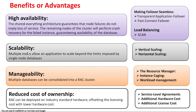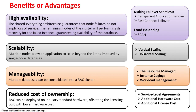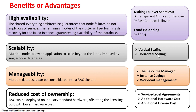Scalability in RAC supports both vertical and horizontal scaling. For vertical scaling, I can bring down one instance alone, increase its RAM, CPU, and hardware, and the application connects to any surviving instance. In standalone, bringing down the instance means all applications face downtime. For horizontal scaling, I have three instances and I can add two more or remove one or two instances without downtime. Both vertical and horizontal scaling can be achieved without downtime in RAC.